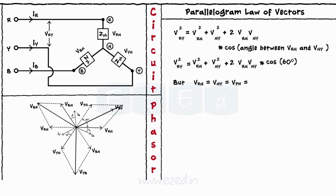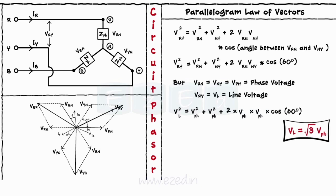But Vrn equals Vny equals Vph and Vry equals Vl. Hence, we get the relation Vl equals root 3 times Vph. And from the circuit diagram, the line current equals the phase current for the star connected system.